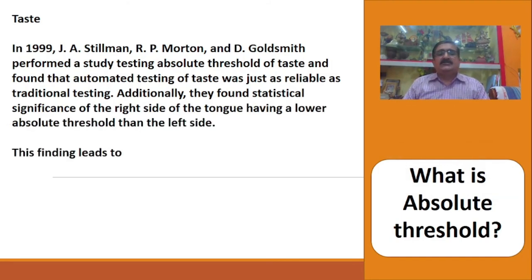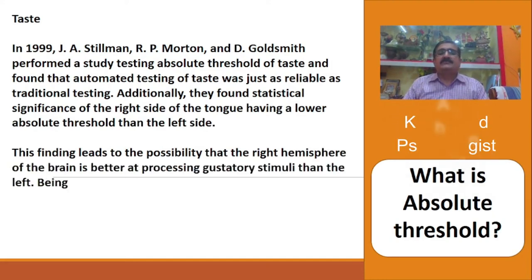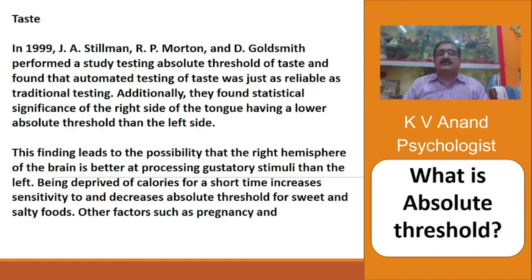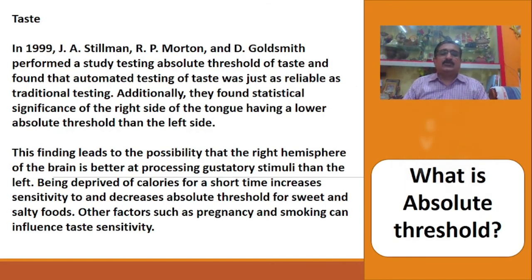Additionally, they found statistical significance of the right side of the tongue having a lower absolute threshold than the left side. This finding leads to the possibility that the right hemisphere of the brain is better at processing gustatory stimuli than the left. Being deprived of calories for a short time increases sensitivity and decreases absolute threshold for sweet and salty foods. Other factors such as pregnancy and smoking can also influence taste sensitivity.